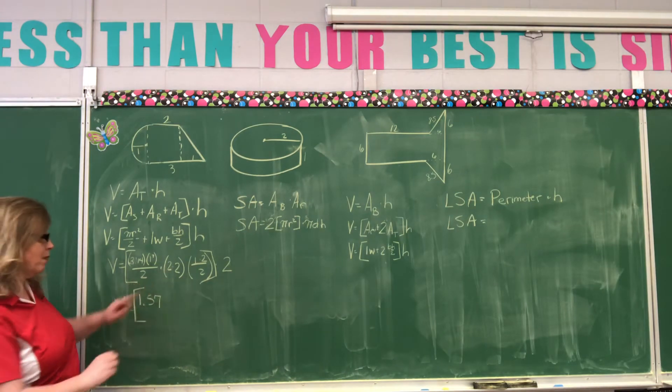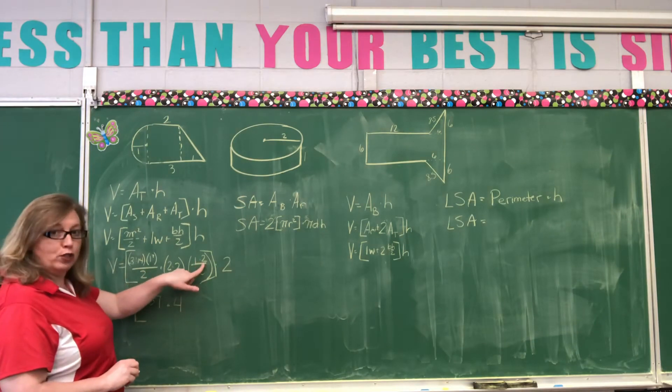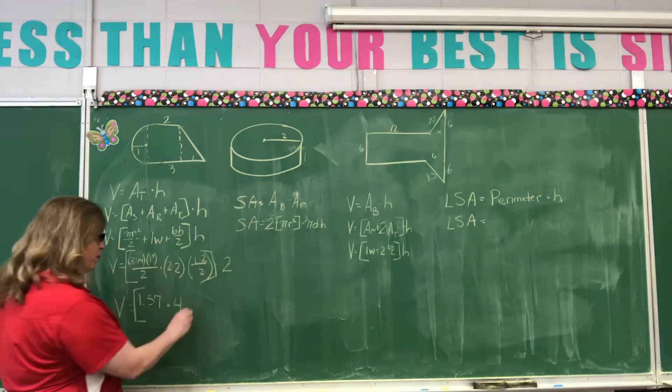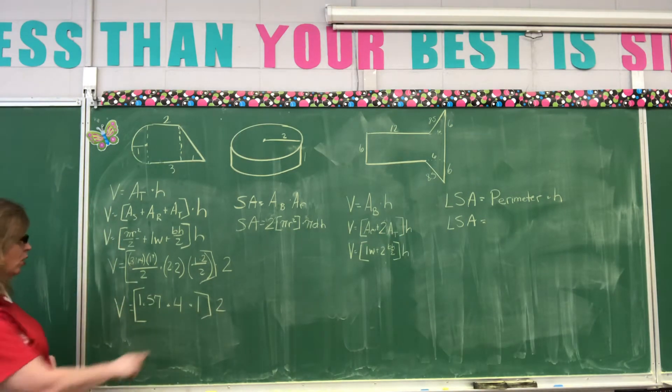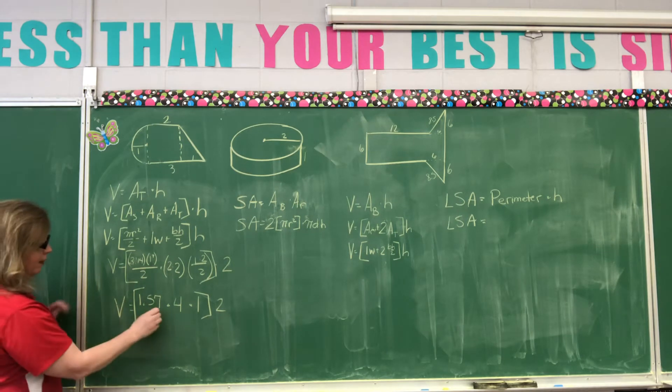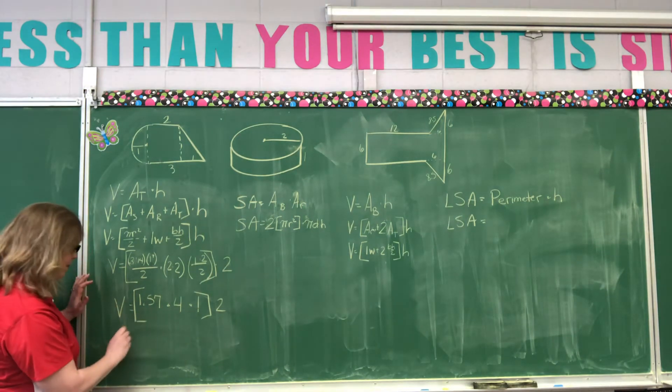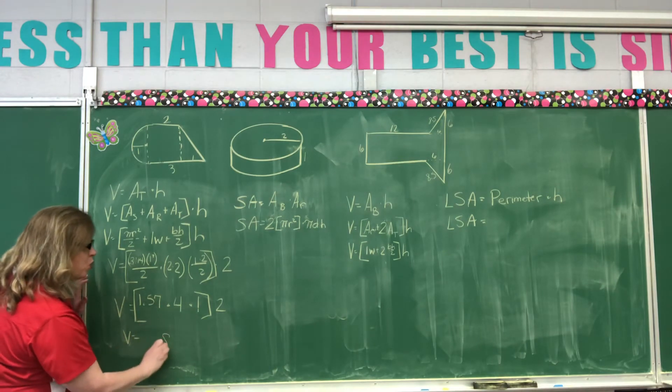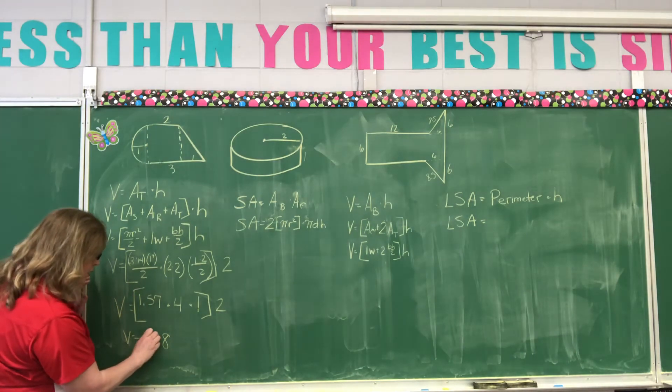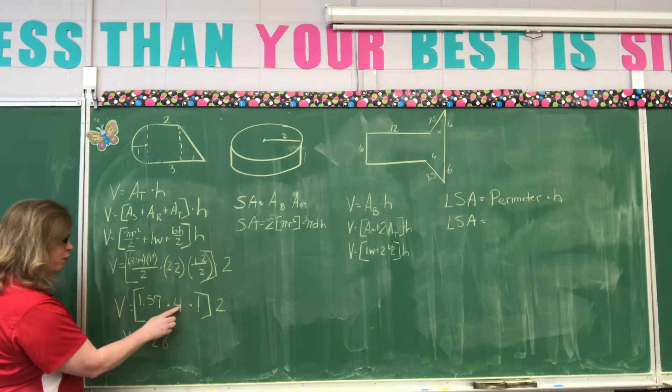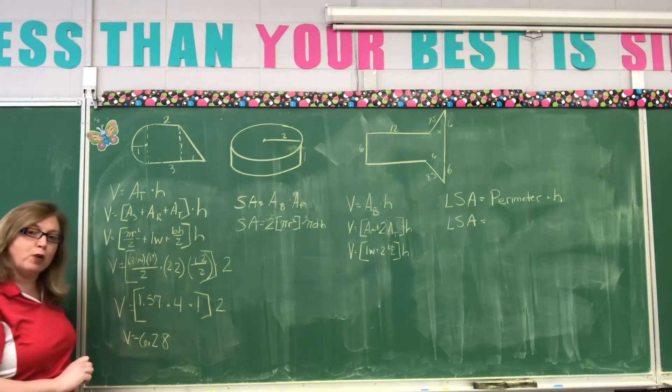Now, we're going to say 2 times 2 is 4. We're going to say 1 times 2 is 2. 2 divided by 2 is 1. And we're going to multiply that by 2 for the height. So, now we're going to go over here. We're going to say 1 plus 4 is 5. So, now 4 times 1.57. So, we're going to say 4 times 7 is 28. 4 times 5 is 20, plus the 2 we carry is 22. Carry the 2. 4 times 1 is 4, plus the 2 we carry is 6. So, it's 6.28.